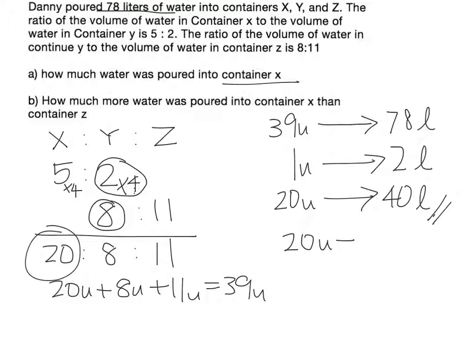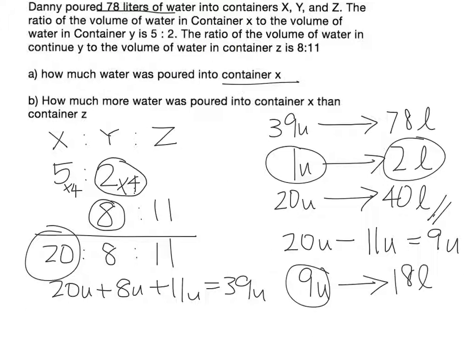Therefore, 9 units will be, 1 unit is 2, 9 units will be 9 times 2, 18 liters.